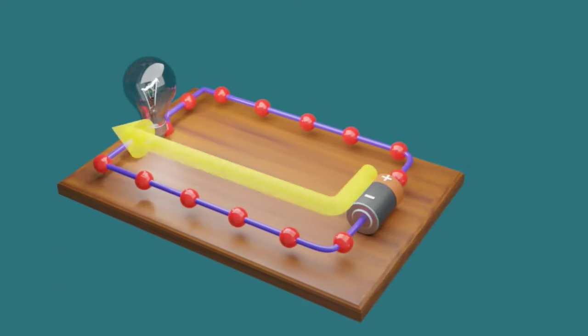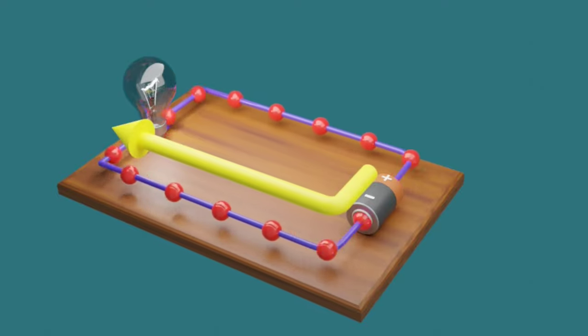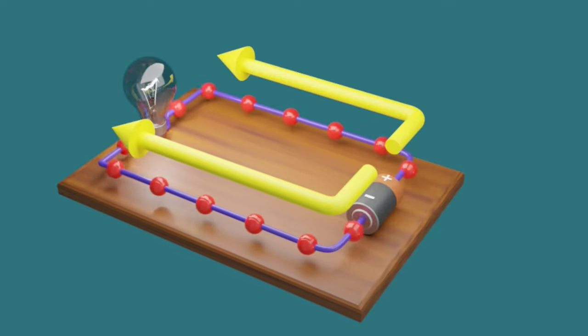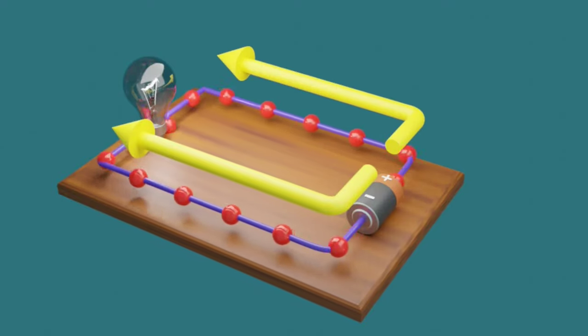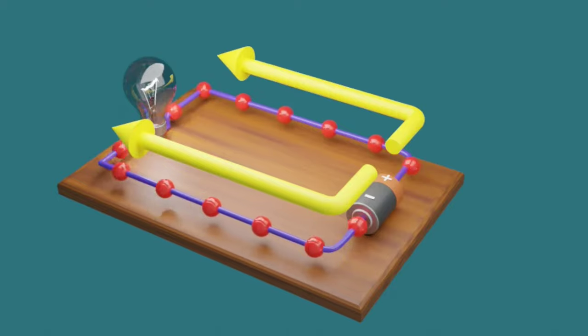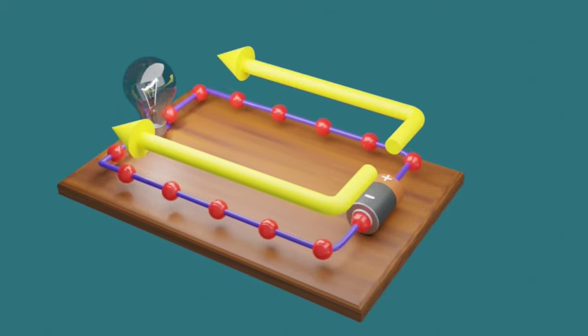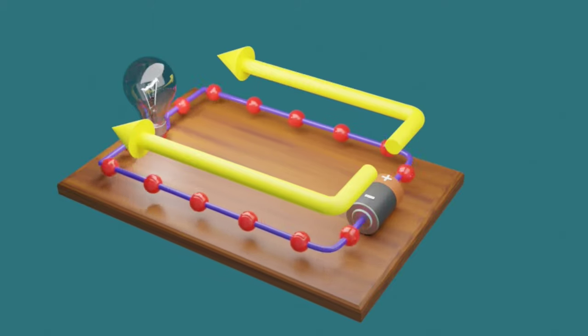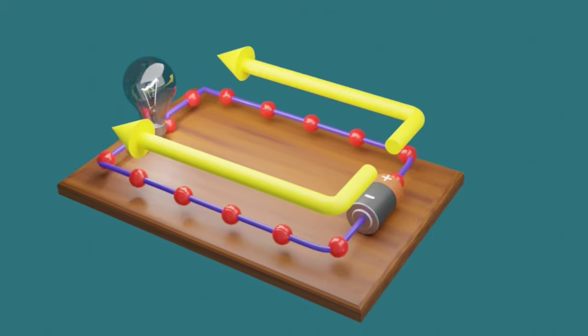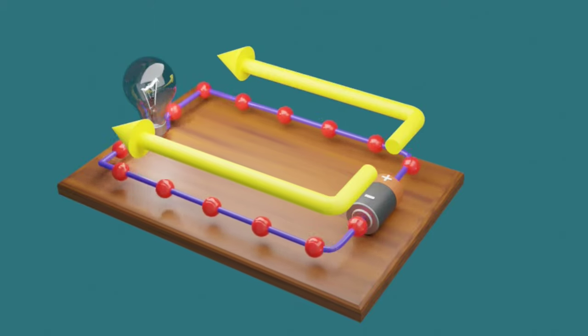Here the flow of electrons is from negative terminal to positive terminal. But the current direction is mentioned in the opposite direction of electron flow. This is because at the time of discovery of electricity, the electron was not yet discovered. So scientists believed that the current is due to the flow of positive particles from positive terminal to negative terminal. Even after the discovery of electron, this notation is not updated.